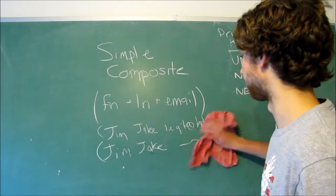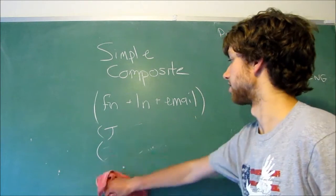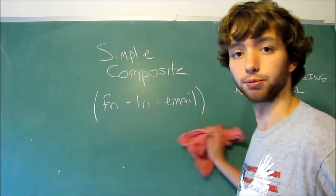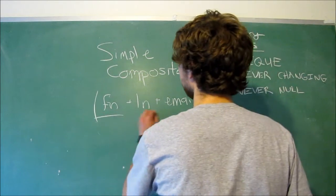So that's an example of a composite primary key. The reason is, because it consists of three columns. One, two, three.